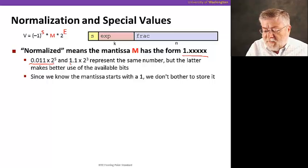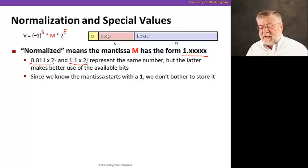So if we wanted to represent the number .011 times two to the fifth, we would normalize that to be 1.1 times two to the three. And those are exactly the same, but the latter makes better use of the available bits, because we don't have to bother with those extra zeros.